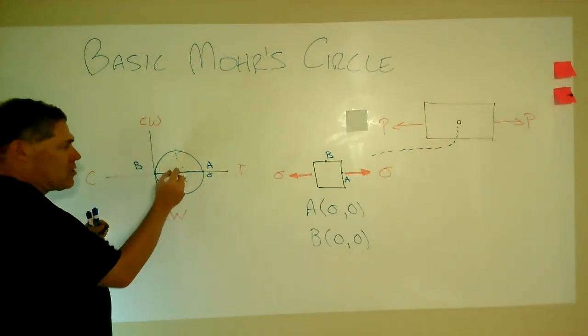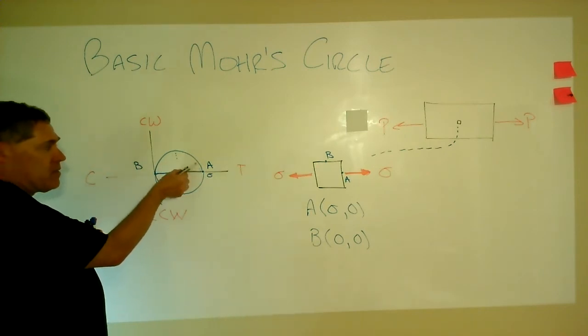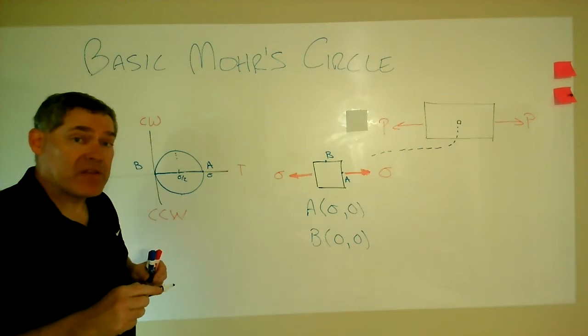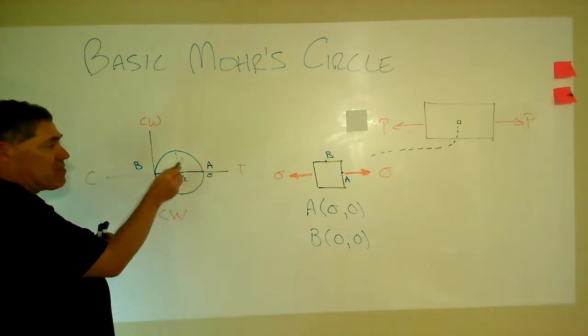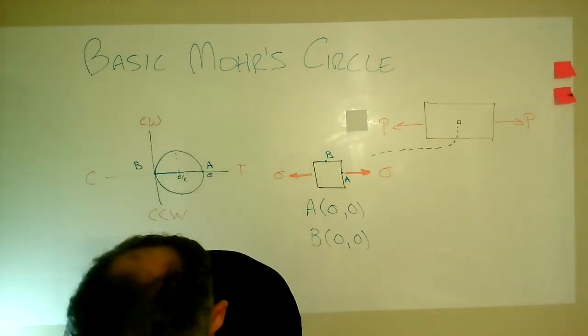The other is to note where the maximum shear stress is located, which is at the Mohr circle. Well, we go 90 degrees over to that maximum value. 90 degrees in Mohr circle is 45 in real life. So that means the maximum shear stress is happening at 45 degrees in real life.